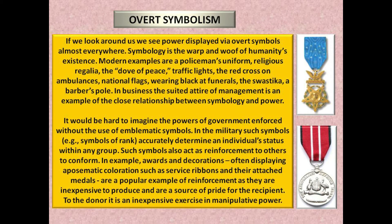Overt symbolism: if we look around us we see power displayed via overt symbols almost everywhere. Symbology is the warp and woof of humanity's existence. Modern examples include a policeman's uniform, religious regalia, the dove of peace, traffic lights, the red cross on ambulances, national flags, wearing black at funerals, the swastika, a barber's pole. In business, the suited attire of management is an example of the close relationship between symbology and power. In the military, symbols of rank accurately determine an individual's status within any group and act as reinforcement to conform. Awards and decorations — often displaying aposematic coloration such as service ribbons and medals — are an inexpensive example of reinforcement. To the donor it is an inexpensive exercise in manipulative power.